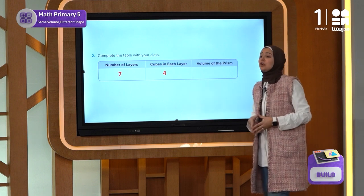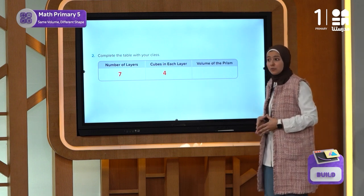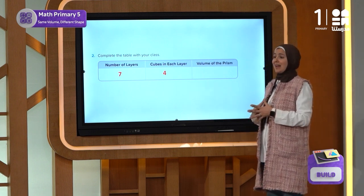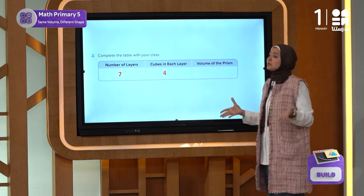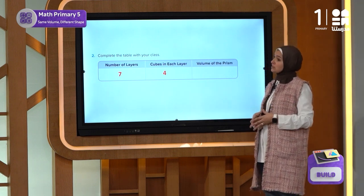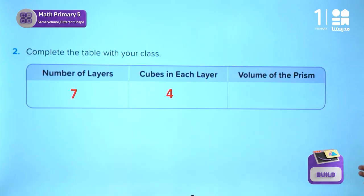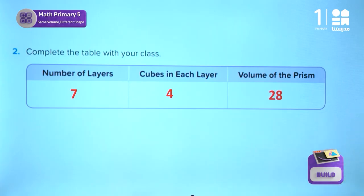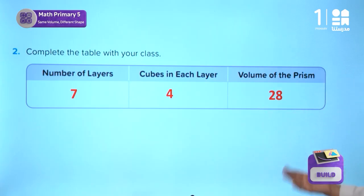Now in problem two, we can complete the given table. To calculate the volume of the rectangular prism, we will add the cubes in all the layers. So that gives us 28 cubes, and the volume is 28 cubic centimeters.